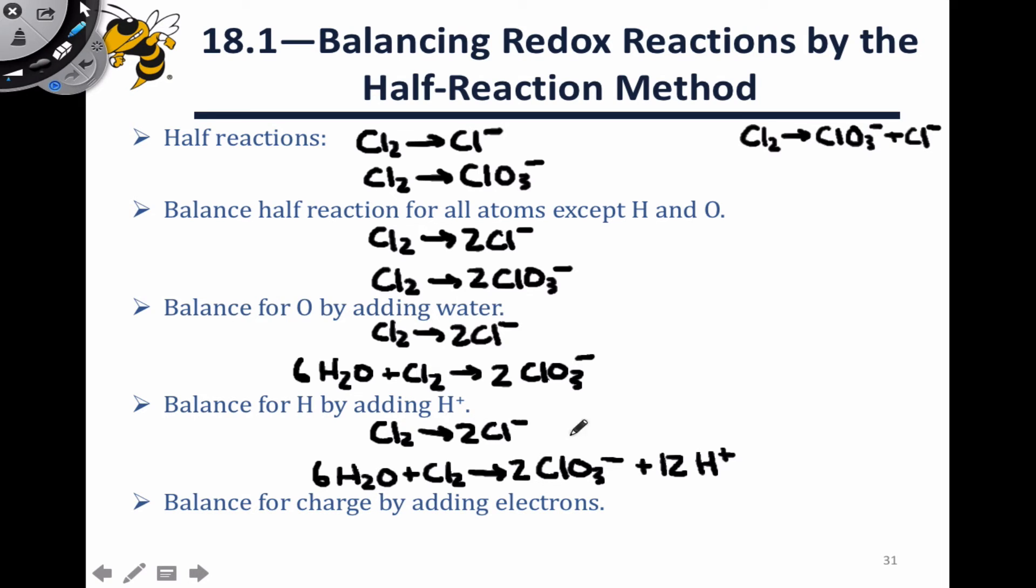And to deal with the electrons, we only need to worry about charges. So we're going to look at the total charge on the reactant and product side, identify the side with more positive charge, and add electrons to that side until the two charges balance.